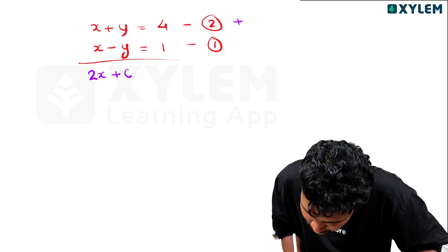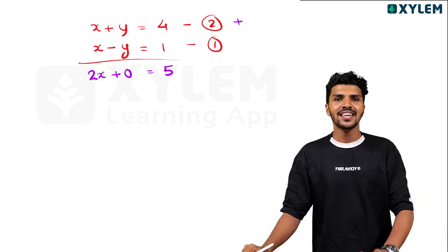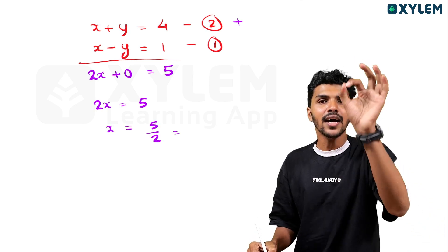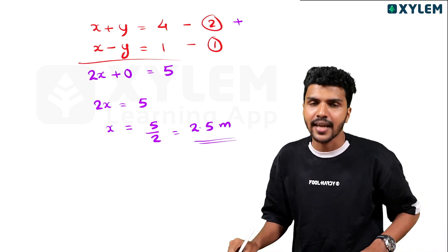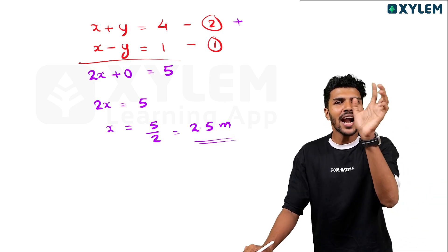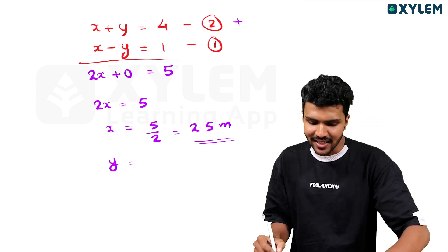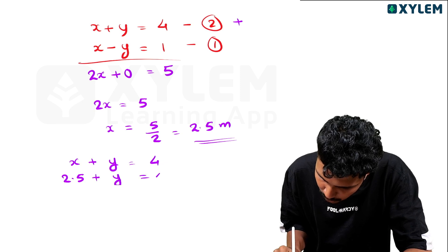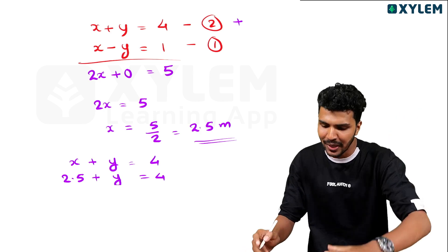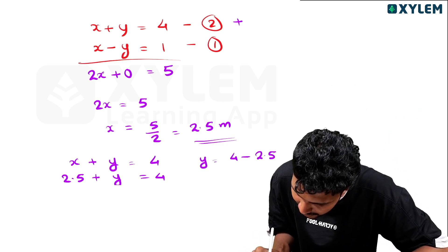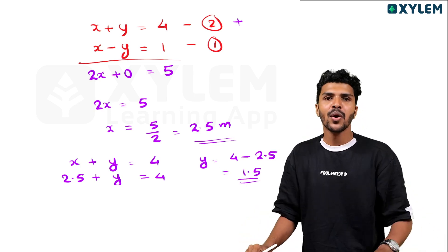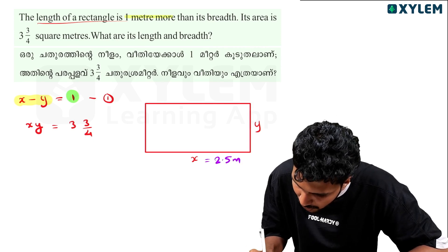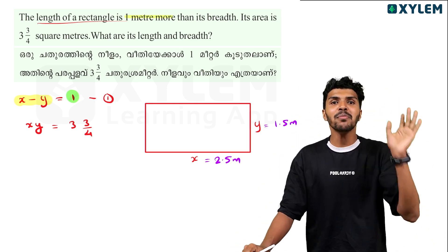From x plus y equals 4 and x minus y equals 1, solving gives 2x equals 5, so x equals 5 by 2. V is equal to 4 minus 2. You can see x is equal to 2 meters and y is equal to 1 meter.